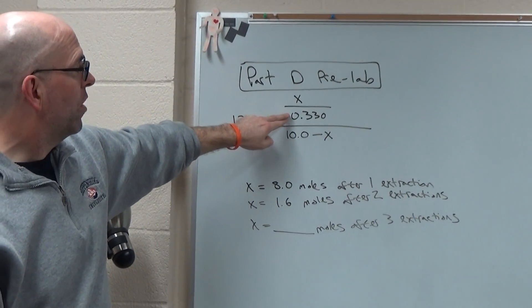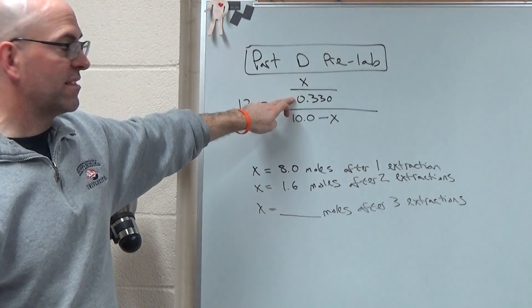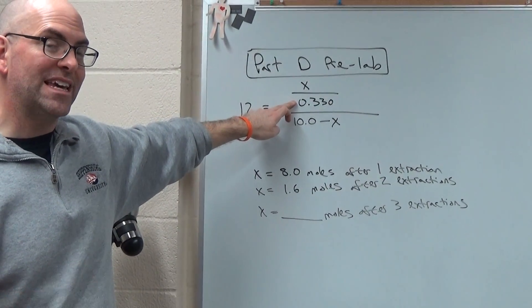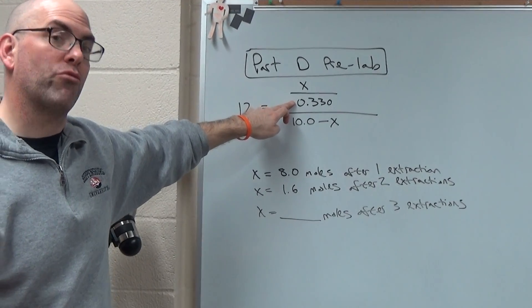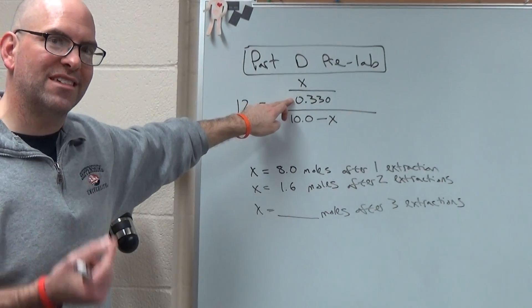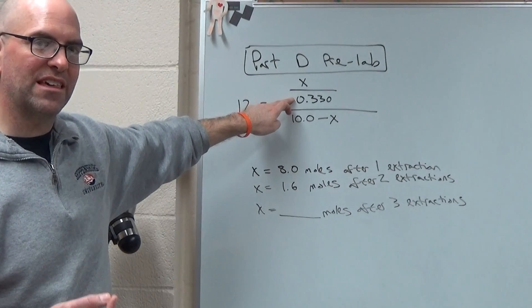In the numerator, what the 0.330 represents is the volume of the TMBE that was used for each extraction. For your calculations in number three, it's 0.50 milliliters. So just knowing what these things represent.